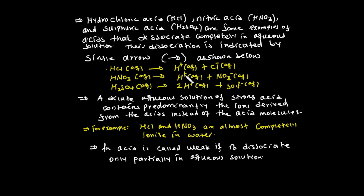Nitric acid is the same — it produces hydrogen and nitrate ions. Sulfuric acid in solution produces sulfate ions. For example, hydrochloric acid and nitric acid are almost completely ionized in water. The solution of a strong acid contains ions dominantly derived from the acid.